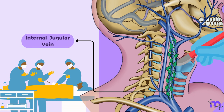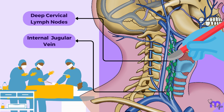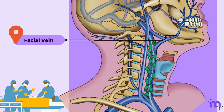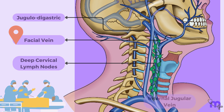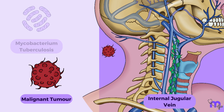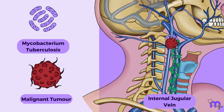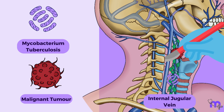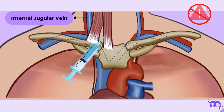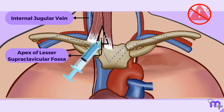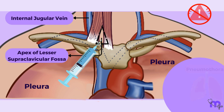In surgical practice, the internal jugular vein serves as a crucial guide during the removal of deep cervical lymph nodes. The facial vein is of particular importance among the tributaries, as it serves as a useful landmark for the removal of the jugulodigastric, tonsillar, and upper anterior group of deep cervical lymph nodes. In some clinical scenarios, malignant and tuberculous lymph nodes may adhere to the internal jugular vein, necessitating resection of a portion of the vessel. To safely cannulate the internal jugular vein, a needle is inserted at the apex of the lesser supraclavicular fossa, directed backward and upward to avoid puncturing the cervical pleura, which could result in pneumothorax.